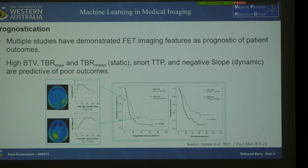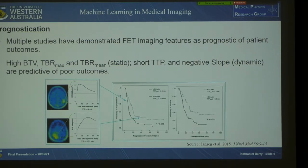For prognostication, multiple studies have demonstrated FET PET imaging features as prognostic of patient outcomes. In general, high biological tumour volume and high maximum mean tumour to background ratio for static features, and short time to peak and negative slope for dynamic features, are predictive of poor patient outcomes. Using cut-off analysis we can significantly stratify patients based on outcomes such as progression-free survival and overall survival.